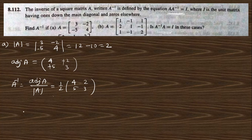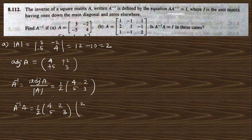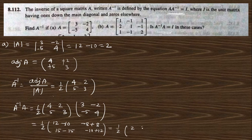Now verify A⁻¹A = I. A⁻¹ = (1/2) × [4, 2; 5, 3] and A = [3, -2; -5, 4]. Multiplying: (1/2) × [12-10, -8+8; 15-15, -10+12] = (1/2) × [2, 0; 0, 2] = [1, 0; 0, 1] = I. So for question A, A⁻¹A = I is satisfied.